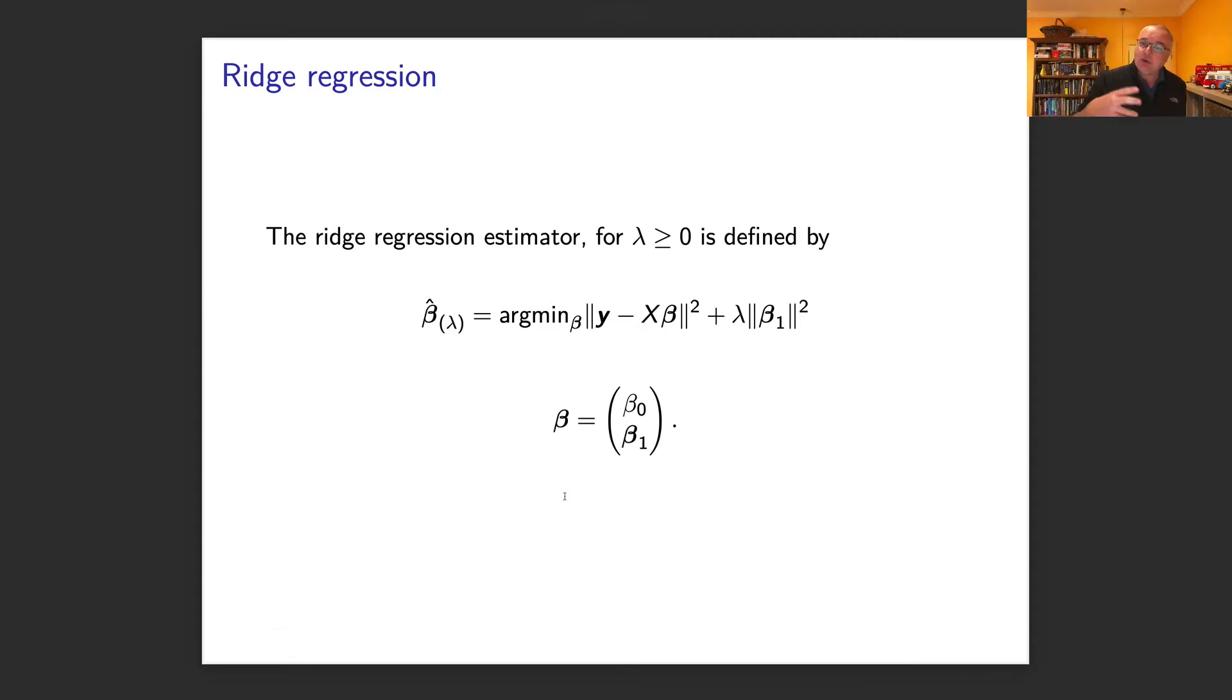So we could do our usual find the values that give us least squares, but we add a penalty term. In this case, we're basically trying to get the coefficients—every coefficient except the intercept—as small as possible.